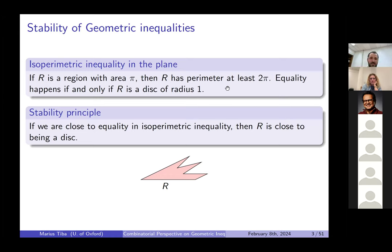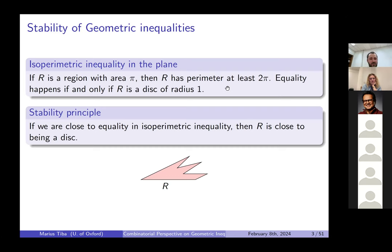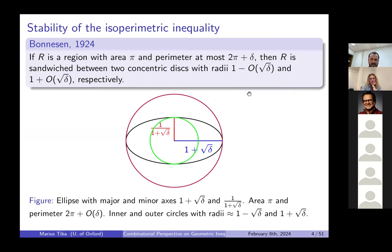By region I essentially mean any shape enclosed by a simple curve with no loops. A major problem in this area is the stability problem or inverse problem, which in the case of the isoperimetric inequality asks: if we are close to equality, is the region I close to being a disk? A classical result 100 years old, due to Bonnesen, says that if I is a region of area π with perimeter at most 2π + δ, then I is sandwiched between two concentric disks of radii 1 − √δ and 1 + √δ.